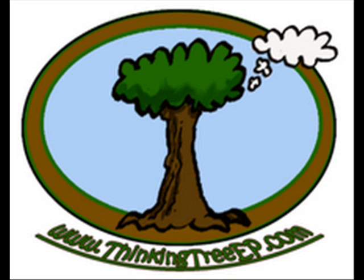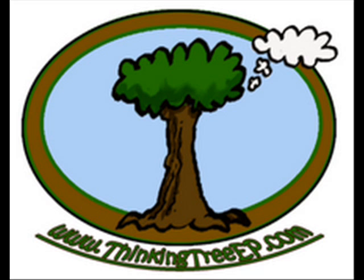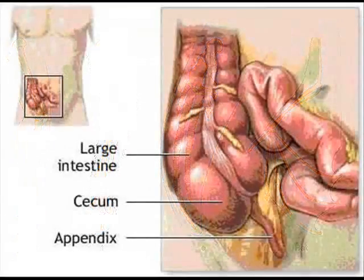Now let's move on to homologies and tree thinking. A homologous structure is a structure that is similar to another structure in a related species but has a different function — basically variations on a structural theme mapped out by an ancestor. For example, your arm, a cat's leg, a whale's fin, and a bat's wing are all homologous structures. All of these have the same basic bone structure.